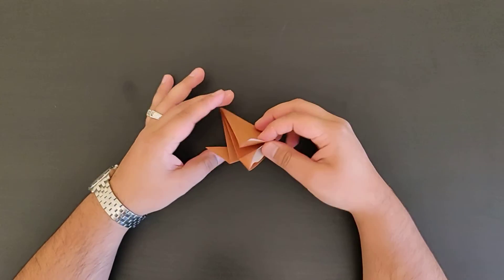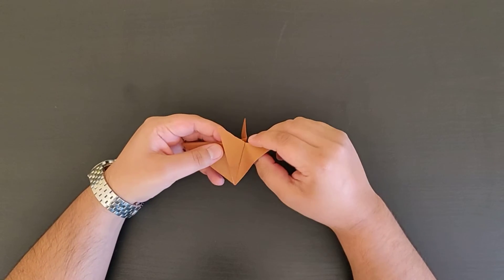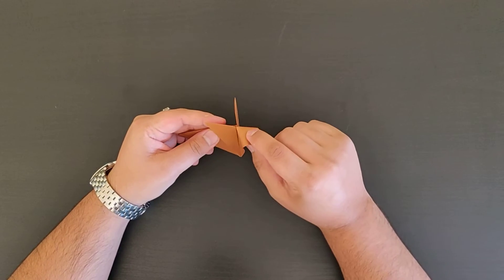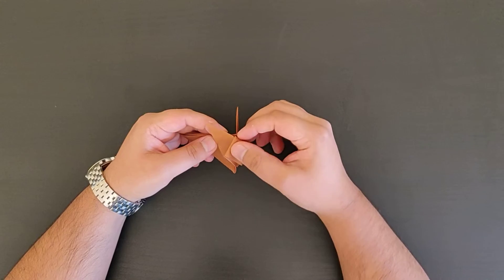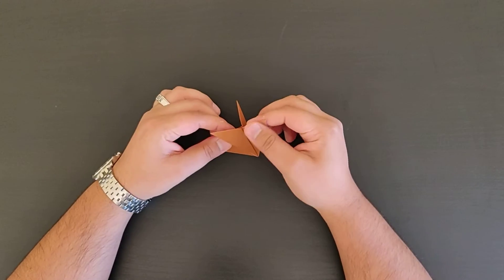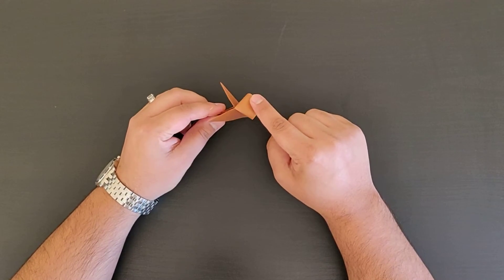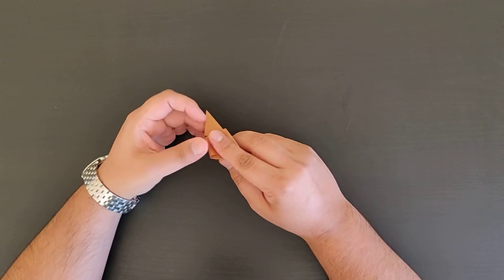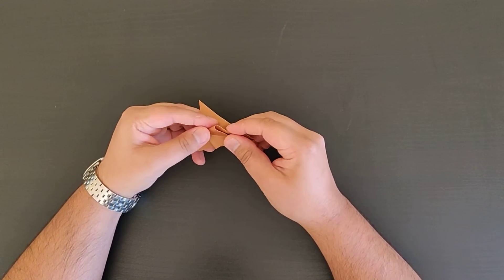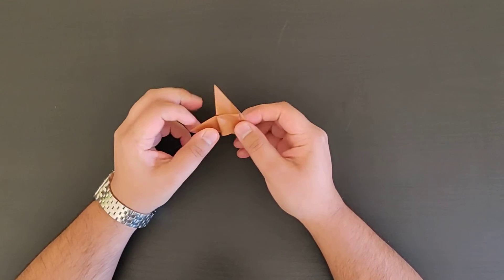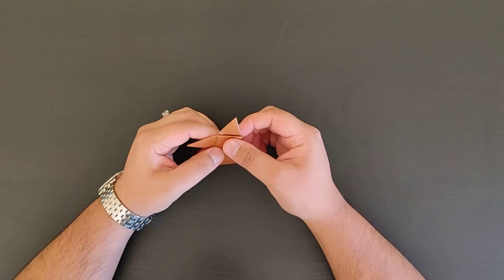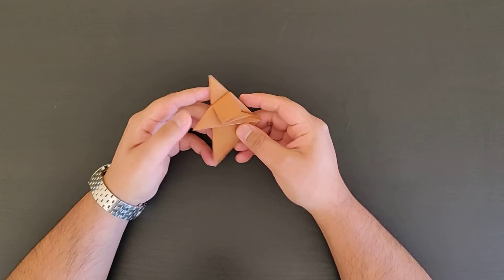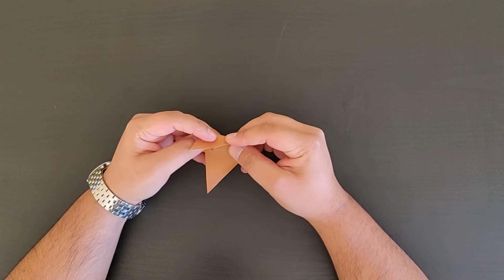And then what we want to do is we want to push this down. So we're going to get this bit that's left, push that down and bring that into the center. Just connect it there, and then just pull all of it together into this side.